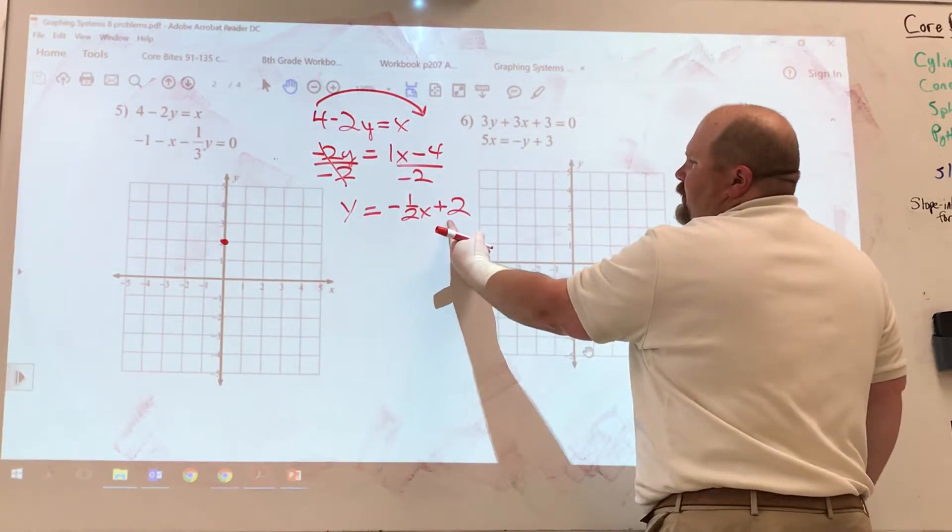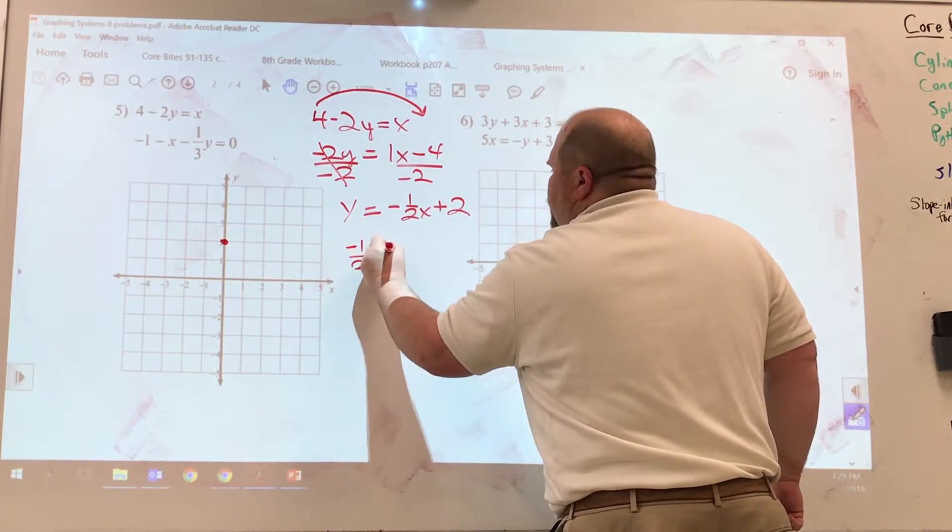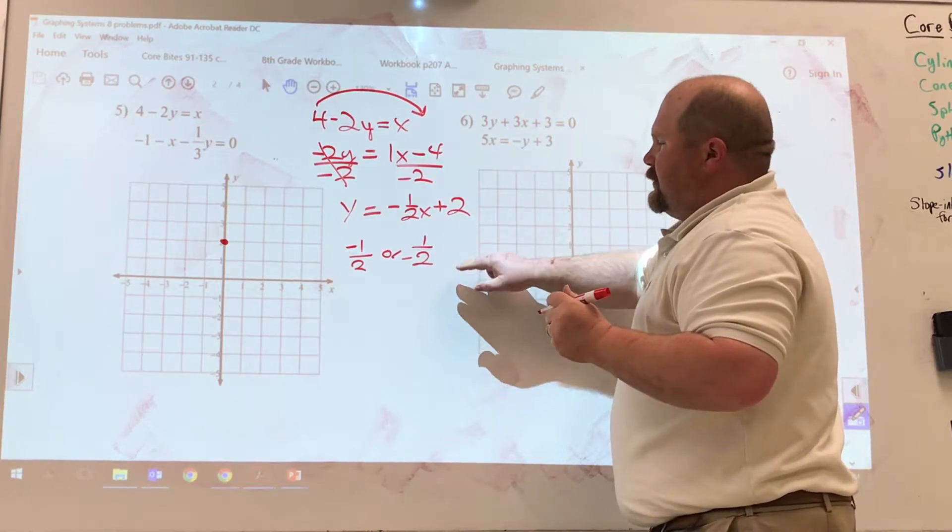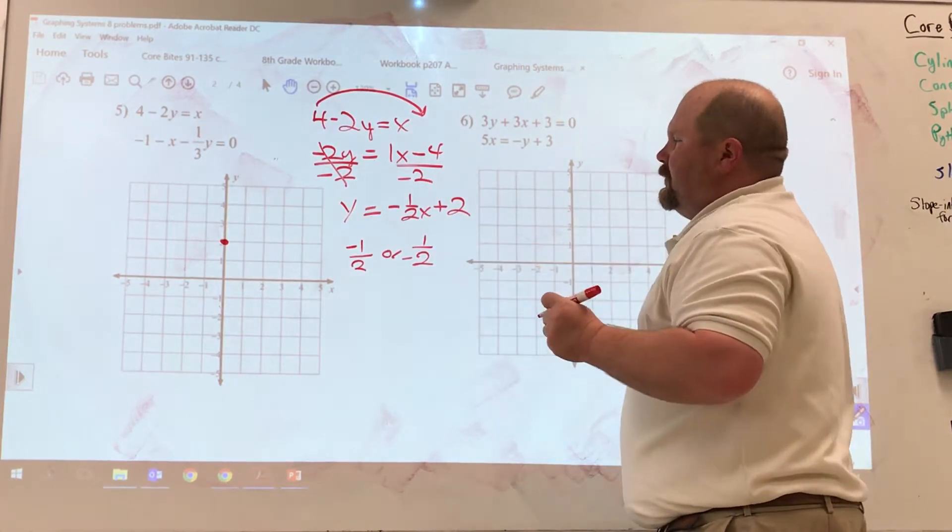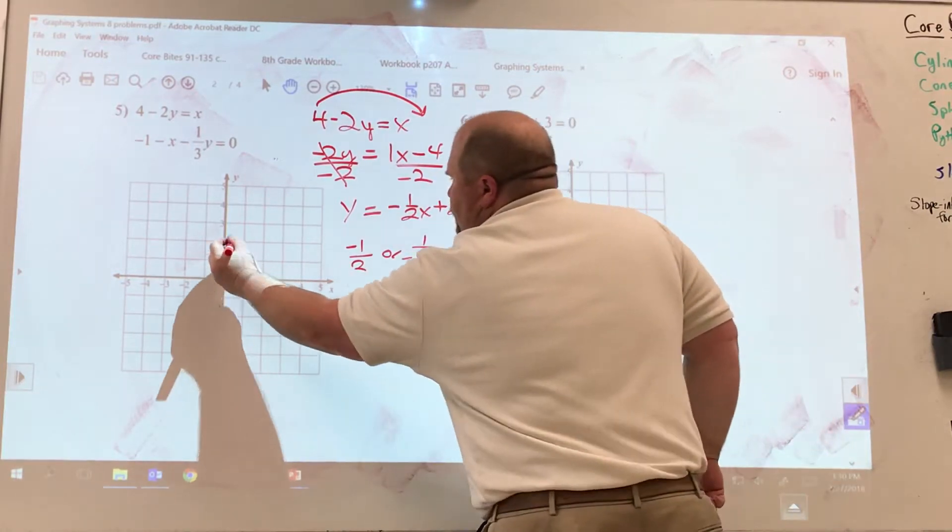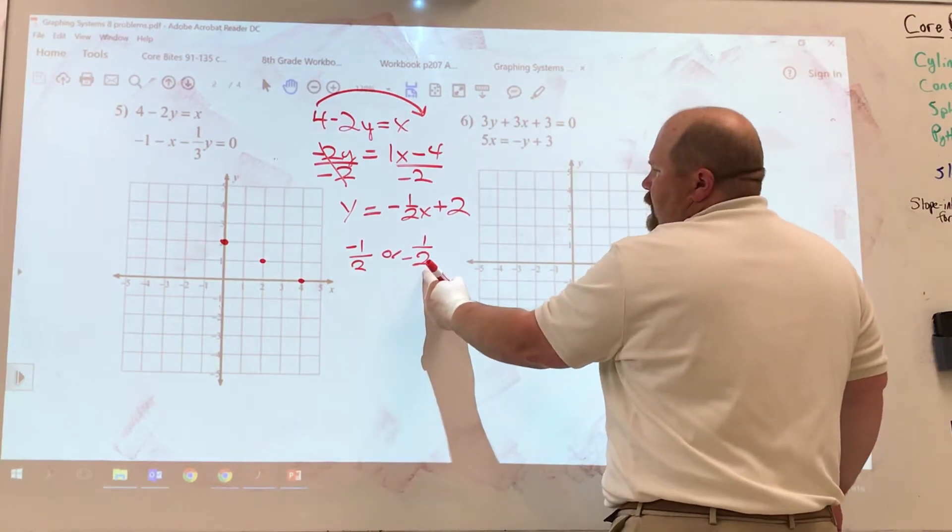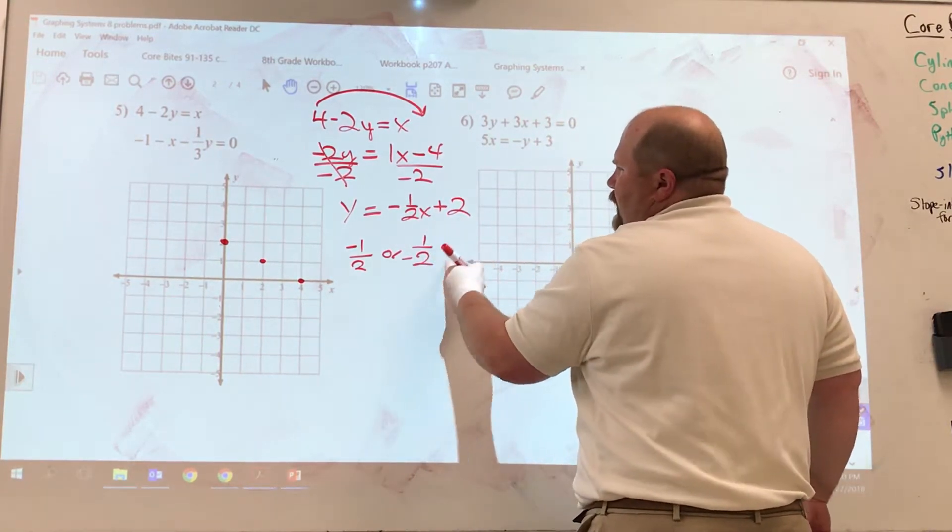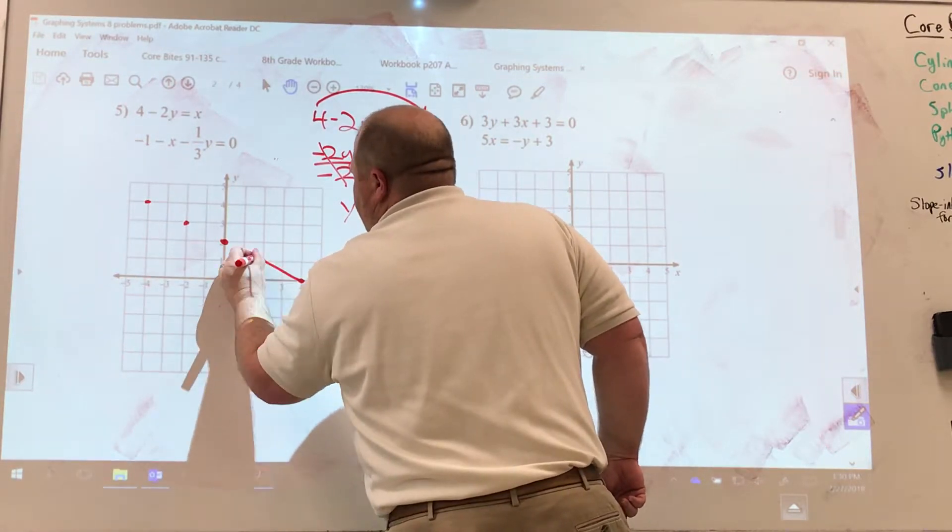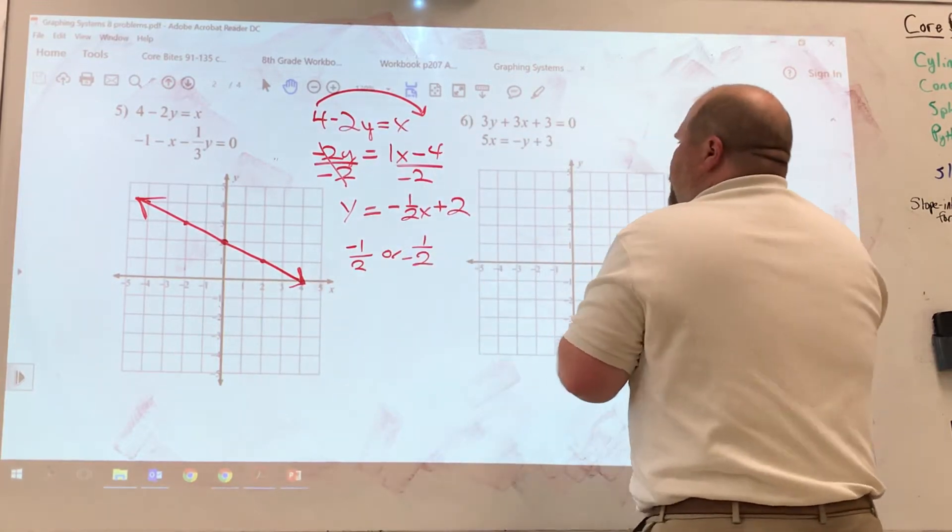Start at my intercept of positive two. The negative, remember, we said you can use it with the top number or you can use it with the bottom number. You just can't use it twice in the same problem, so I can't have negative one and negative two. So if I start here, that guy says go down one, right two. Down one, right two. Down one, right two. I can also do this direction, which would be up one, left two. Up one, left two. Up one, left two. Up one, left two. And you can see that that is the same continuous line.